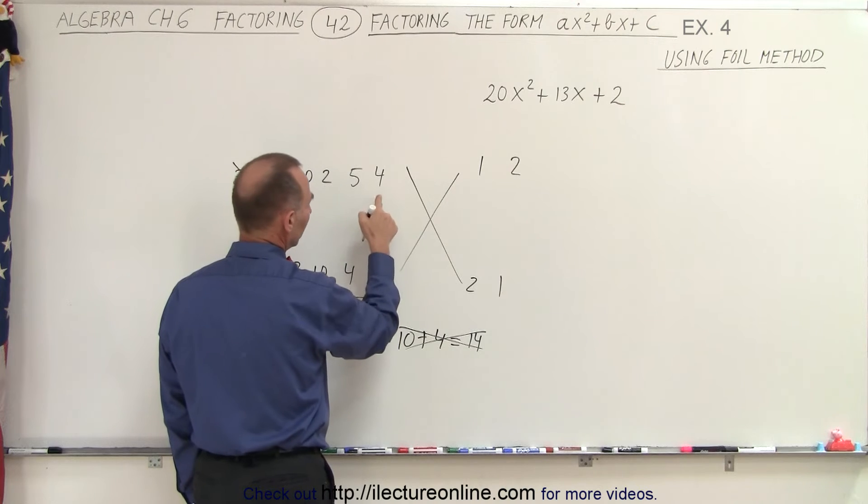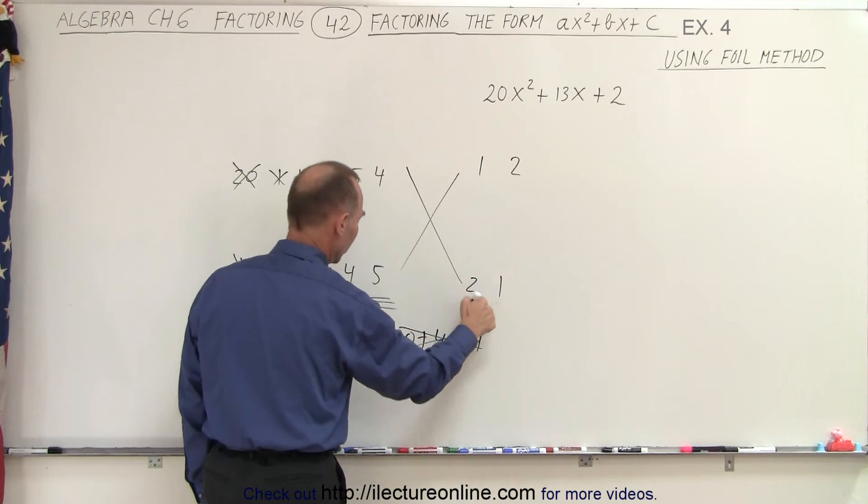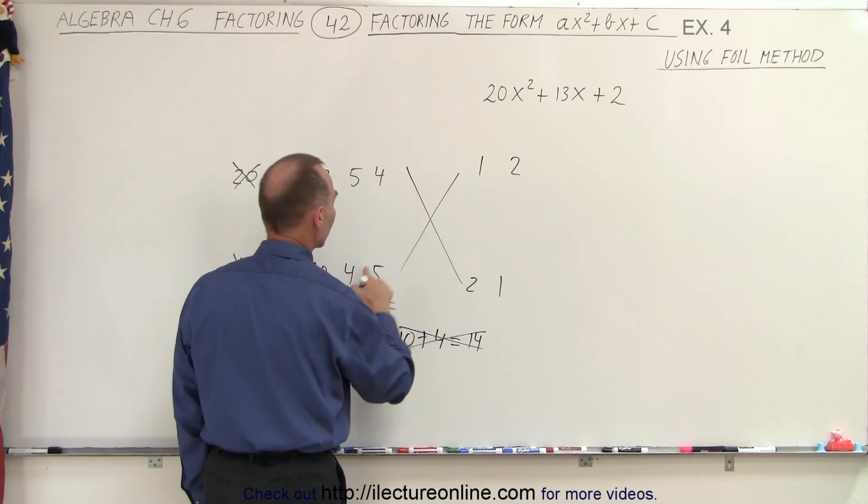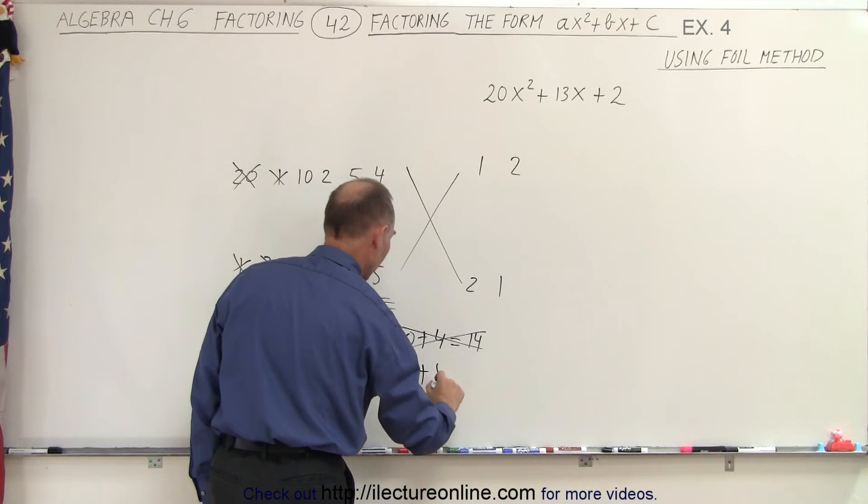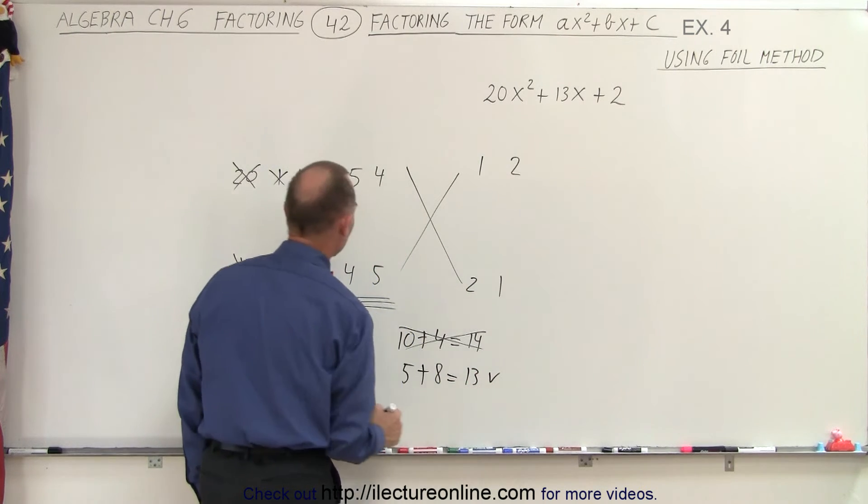How about 5 times 1, that would be 5, and 4 times 2, that would be 8. That gives me 13 which is the right number I need.